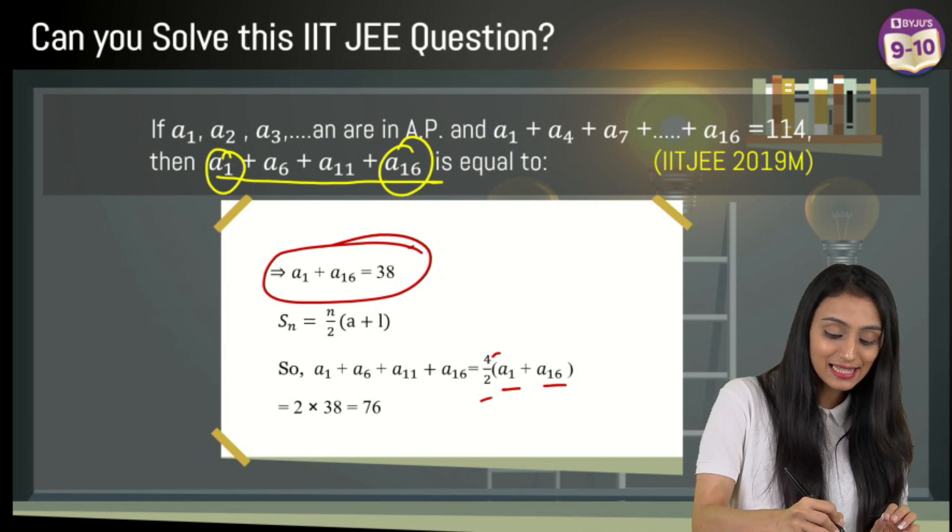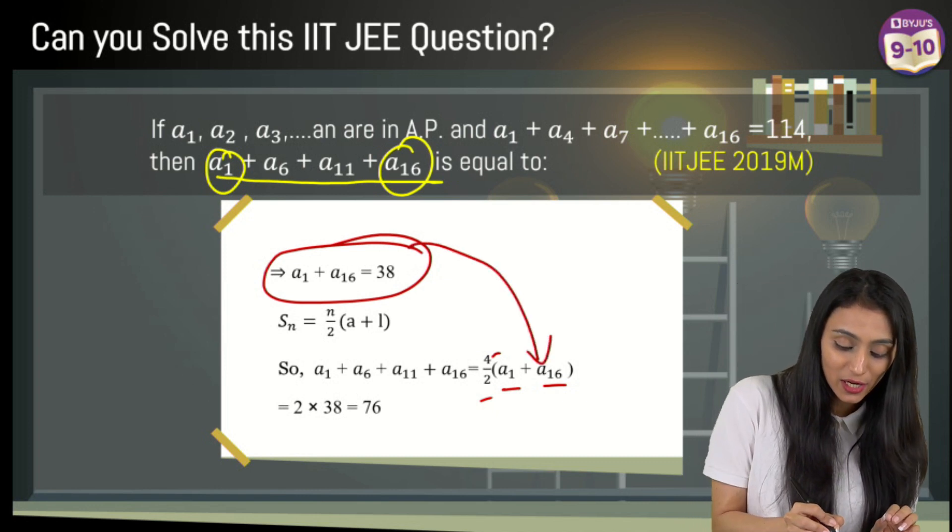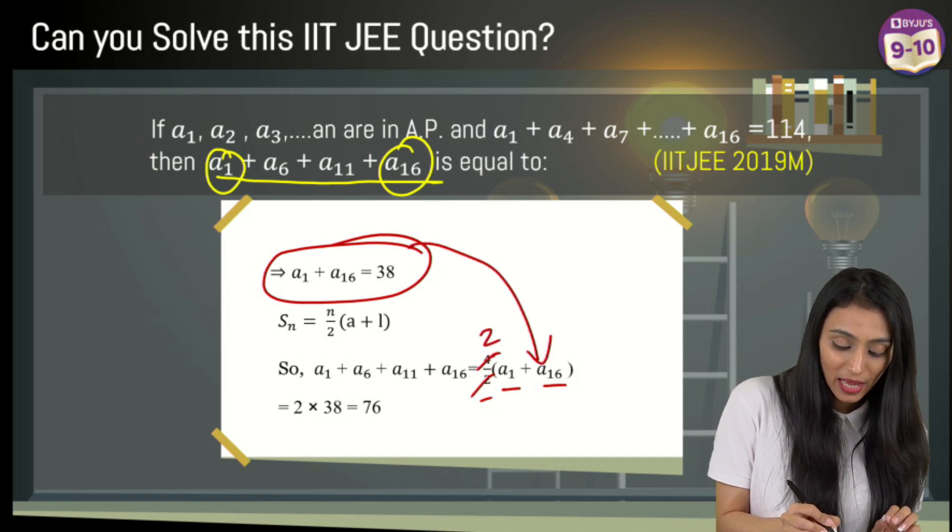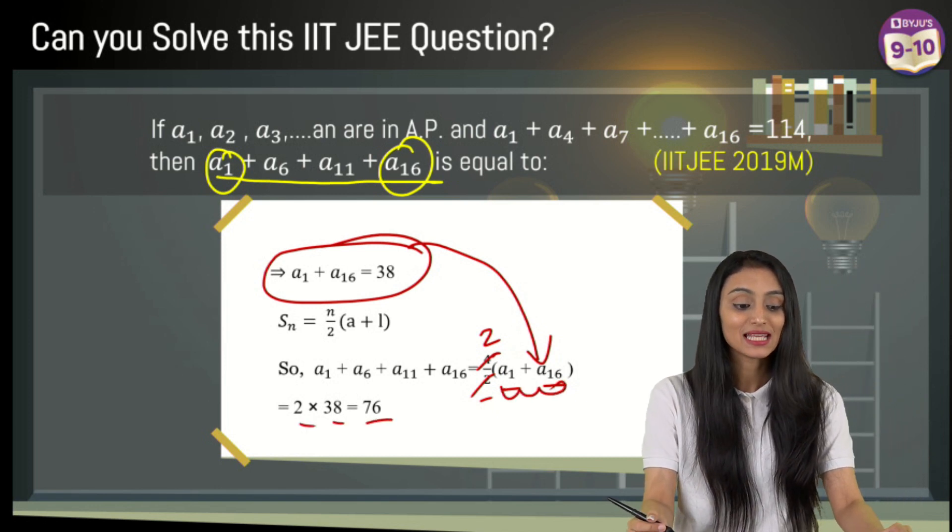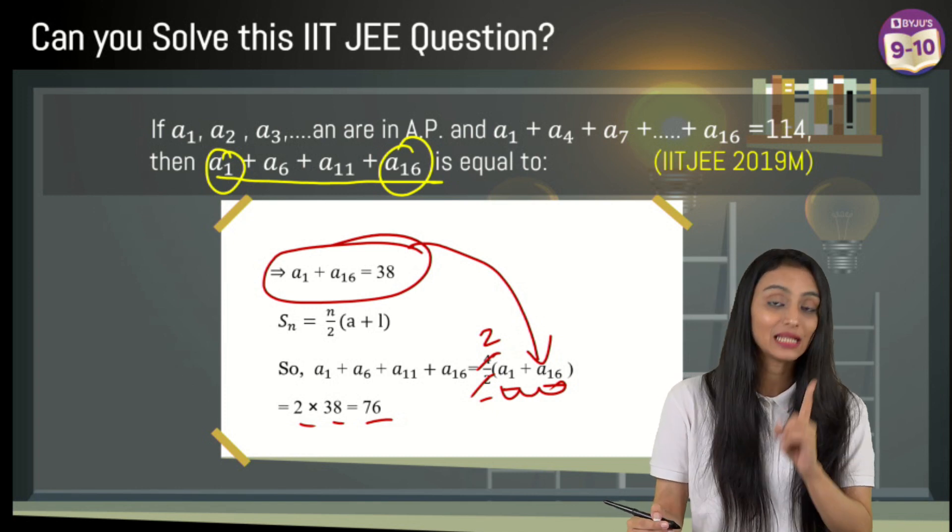That's going to be 4/2(a₁ + a₁₆). I already have the value of a₁ + a₁₆. Let's substitute it here. I'm going to get 2 times 38, which is 76.